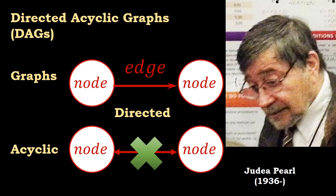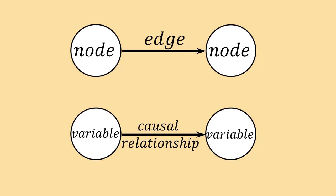What is 'acyclic'? If you have a path that goes from node 1 to node 2, there cannot be a path that goes from node 2 to node 1. This has to do with the mathematics of using this structure — it is a limitation. So these are the directed acyclic graphs, or DAGs, that Judea Pearl proposed to represent causal models of reality.